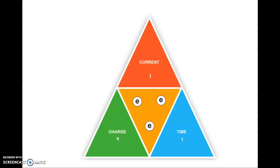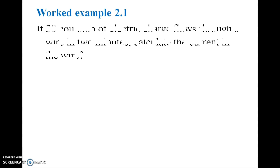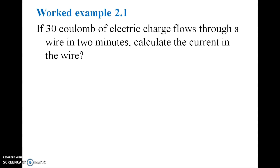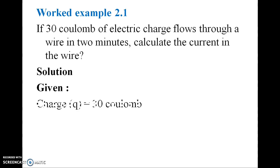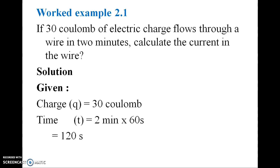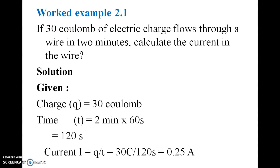Where I is current, Q is charge, and T is time. For example, if 30 coulombs of electric charge flow through a wire in two minutes, calculate the current. Given: Q = 30 C, T = 2 minutes = 120 seconds. Current I = Q ÷ T = 30 ÷ 120 = 0.25 amperes.